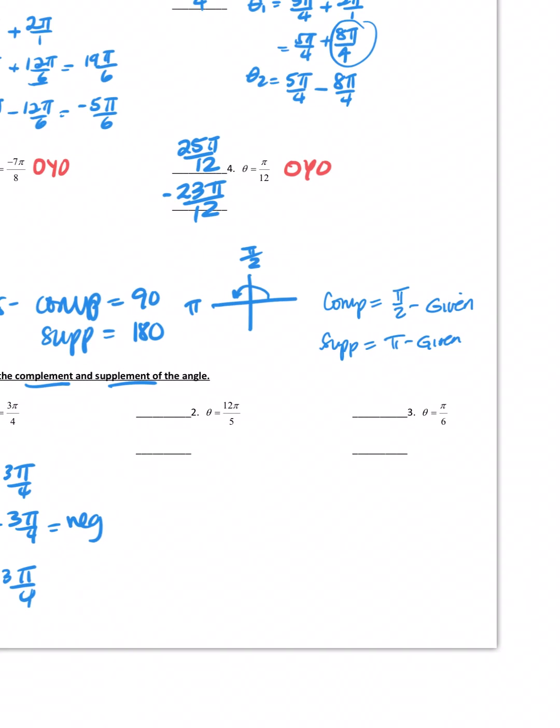Let me try number 2. The complement, π over 2 minus 12π over 5. So my common denominator is going to be 10, so it's 5π over 10 minus 12π over 10. That's going to be negative, so this is going to be none on the complement. What about the supplement, pi over 1 minus 12π over 5? Well that's not going to work either. 5π over 5 is going to be negative as well. So the supplement is none.